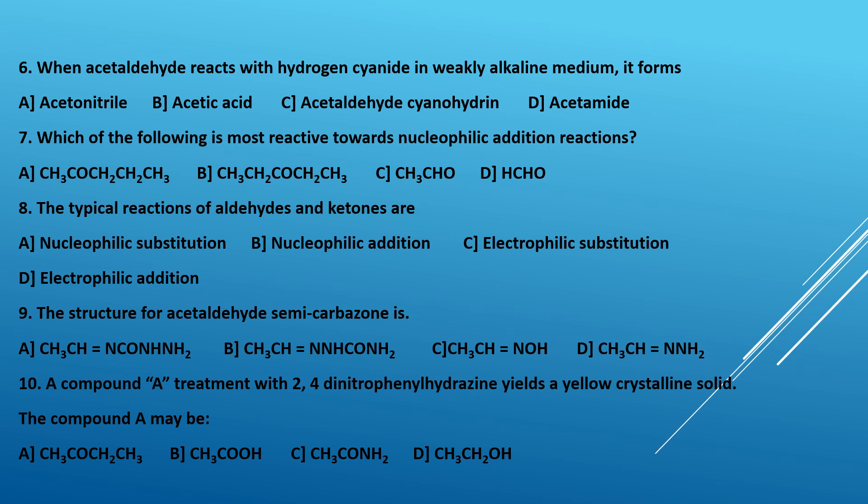Tenth question: a compound A on treatment with 2,4-DNP gives a yellow crystalline solid. Compound A may be — A, 2-butanone (CH₃COCH₂CH₃); B, acetic acid; C, acetamide; D, ethyl alcohol. Since 2-butanone is a ketone, it undergoes reaction with 2,4-DNP to produce a yellow crystalline solid. The correct answer is A.